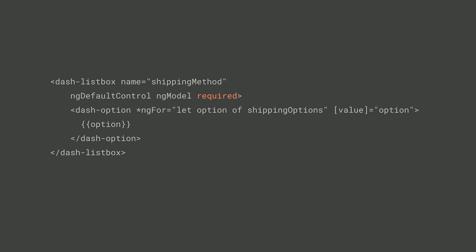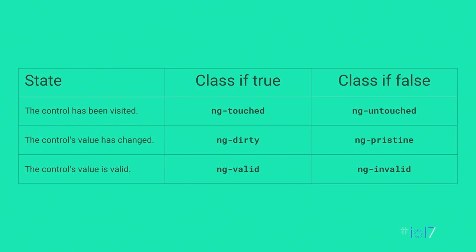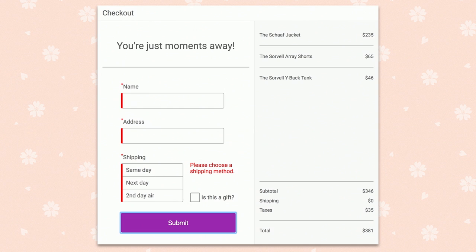Form validation is a magical experience combining web components with Angular forms. Once you've wired up control value accessors, everything you'd expect from form validation just starts working. Adding a required attribute to dash-listbox makes it required as part of standard form controls. Angular forms gives you CSS classes indicating form state: ng-touched or ng-untouched if visited, ng-dirty if changed, and valid/invalid states — all wired up automatically using the same validators you use with standard HTML elements.